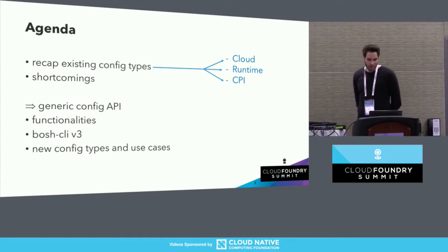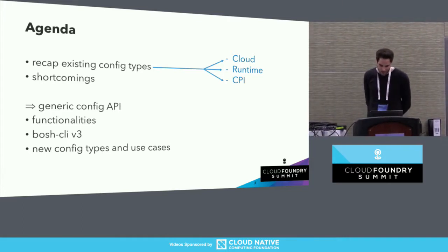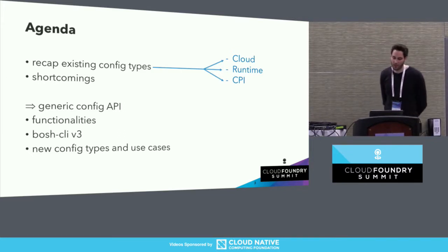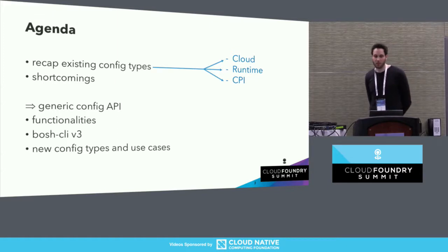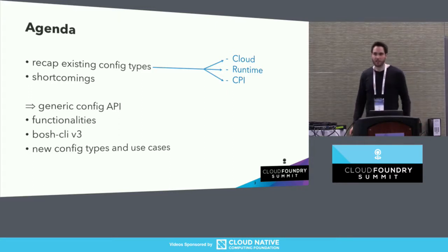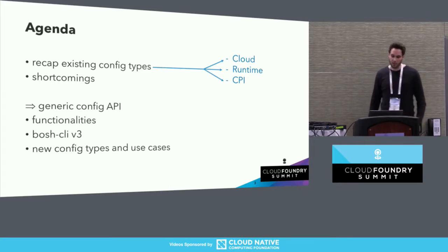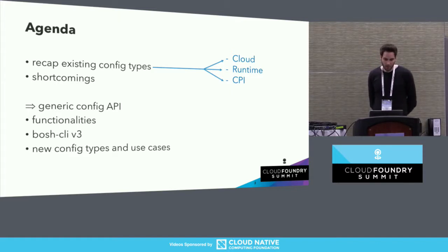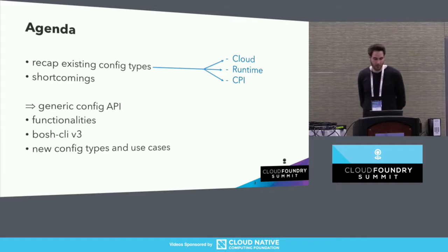In BOSH there are three built-in configuration types: maybe cloud, runtime, and CPI. When I started half a year ago as a BOSH developer and BOSH operator at SAP, it took me some time to get familiar with how these BOSH config types are used. Here's what we will learn in the next 30 minutes: we will first recap existing config types, then reveal shortcomings of the current config approach, and introduce the generic config API.